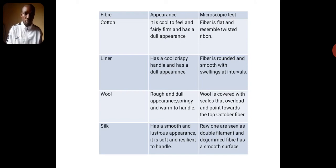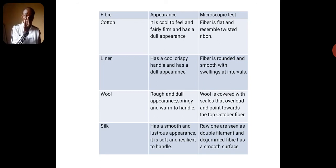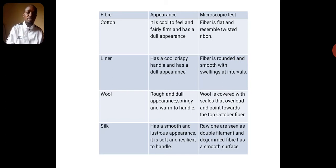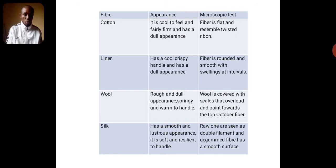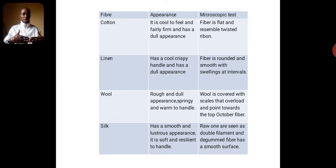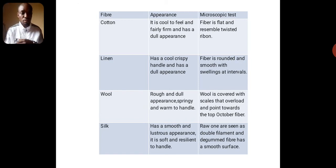Silk has a smooth and lustrous appearance — it is soft and resilient to handle. When viewed under the microscope, raw silk is seen as double filaments. Silk that has had gum removed from it has a smooth surface.